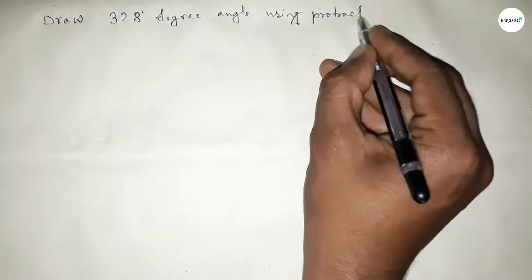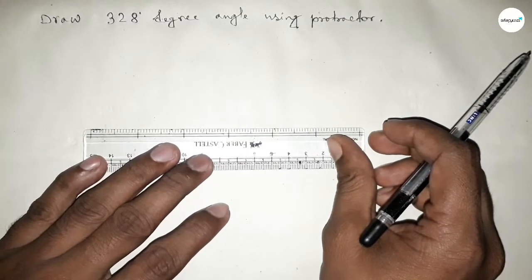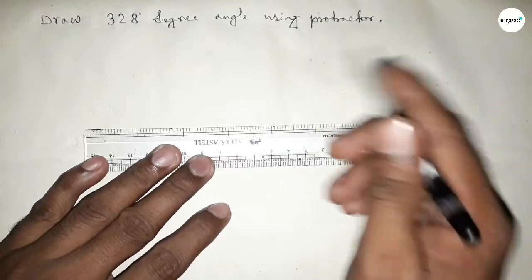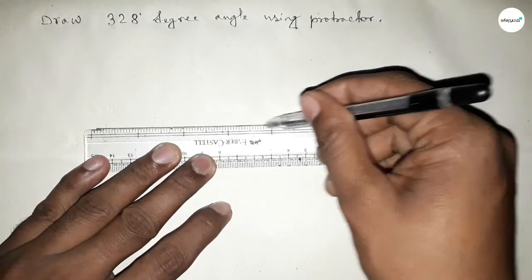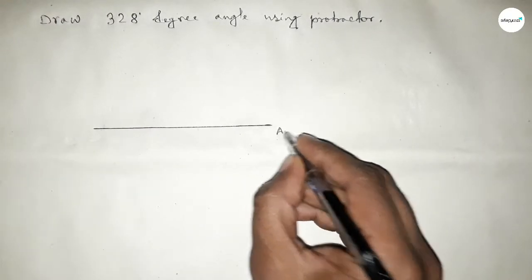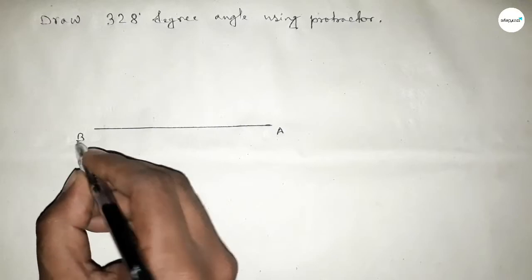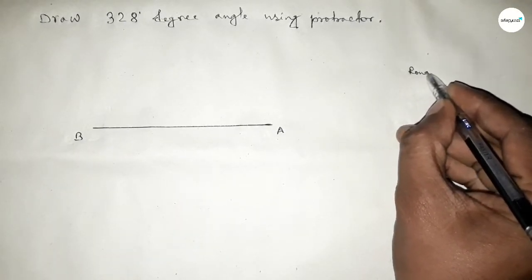So let's start the video. First of all, drawing here a straight line of any length. Taking this end as point A and this end as point B. Now roughly discussing some important calculations here.